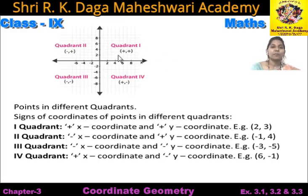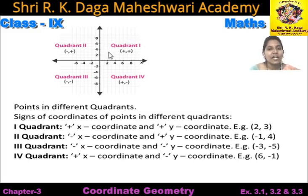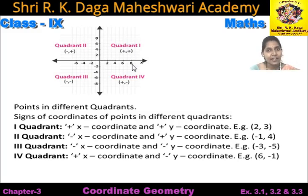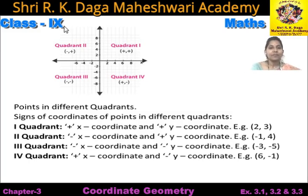Now points in different quadrants. Jab kisi point ko kisi quadrant mein represent karte hain, toh unke sign jo hote hain woh kis tarah se hote hain. As I told you, on right hand side of x-axis we have all positive numbers and on upward side of y-axis all numbers are positive. So in first quadrant both numbers are positive. Yadi hum kisi point ko first quadrant me batate hain, toh x-axis ke right hand side me sare numbers positive hain, aur y-axis ke upar wale numbers bhi sare positive hain.